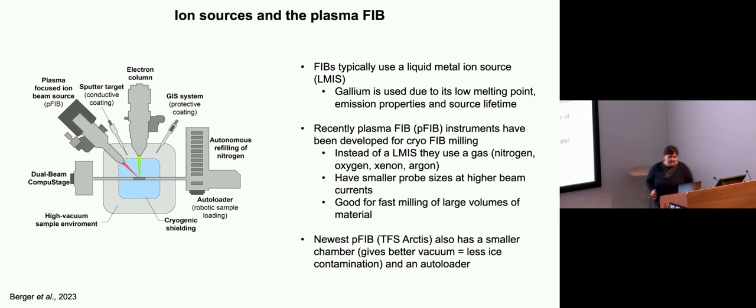You may have heard recently, there's been a lot of talk about plasma FIBs. The more typical source that we use, at least in the context of cryo milling, is a gallium source, a liquid metal ion source. You can use other metals, but normally for the milling is the gallium. But more recently, there have been these plasma instruments that use a gas source instead. These have advantages because they're very good for fast milling of large volumes of material.